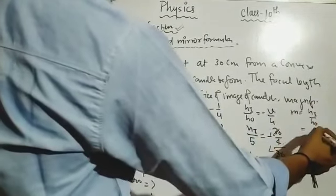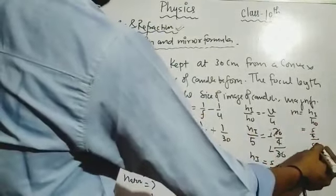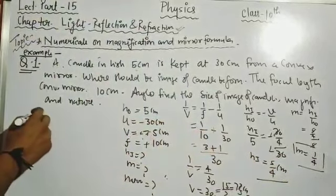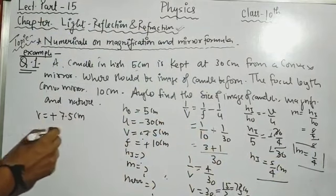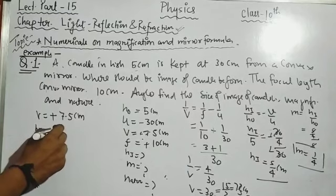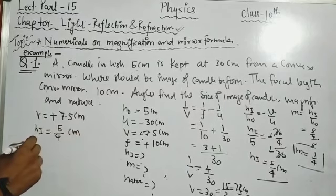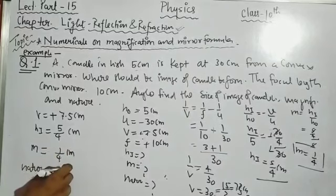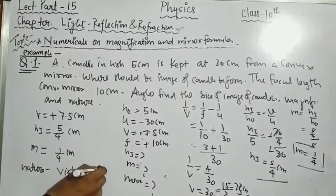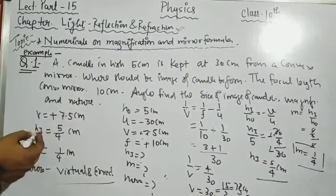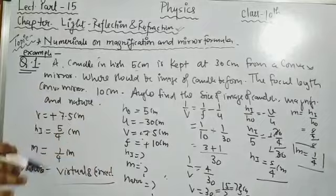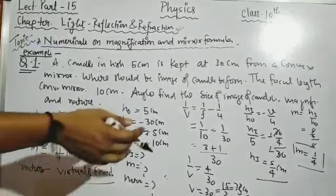Now finding magnification: m = hi/h₀ = (5/4)/5 = 1/4. So magnification = 1/4. Summary of results: v = +7.5 cm, height of image = 5/4 cm, magnification = 1/4, and nature is virtual and erect. This is because both image position and height of image values are positive. If they were negative, the nature would be real and inverted.